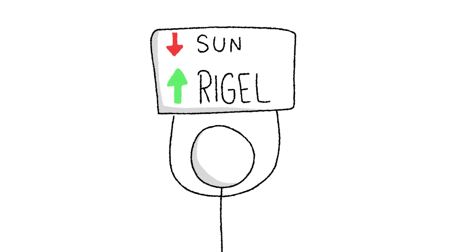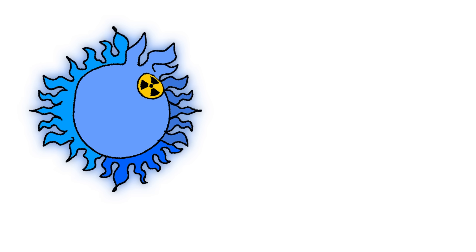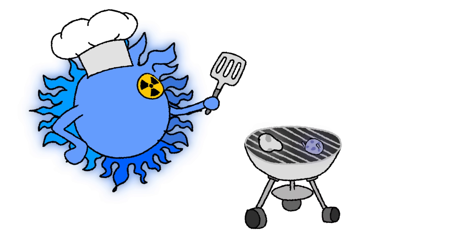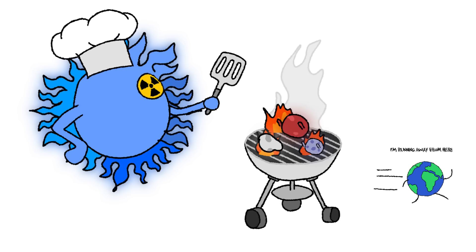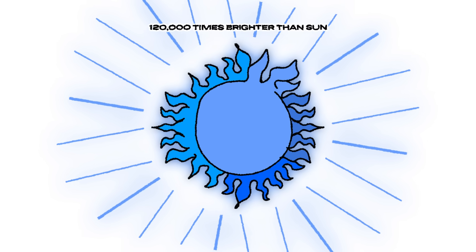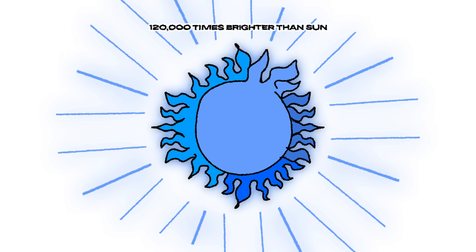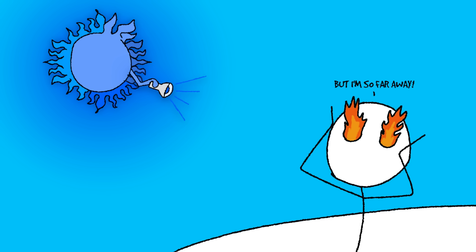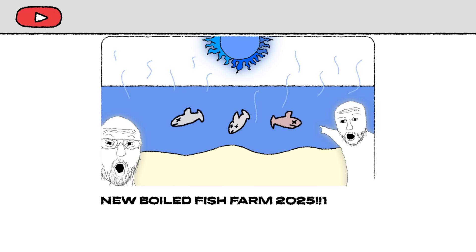So what happens if we swap out the sun for this cosmic powerhouse? The sheer radiation and heat from Rigel would vaporize Mercury, Venus, and Mars instantly. And Earth wouldn't be far behind. Even if we moved Earth's orbit to Pluto, it still wouldn't be safe. Rigel's luminosity is 120,000 times greater than our sun's, meaning even at the edge of the solar system, we'd be blinded by searing neon blue light. Our planet would be permanently overexposed. The oceans would boil away, and the surface would be completely sterilized.